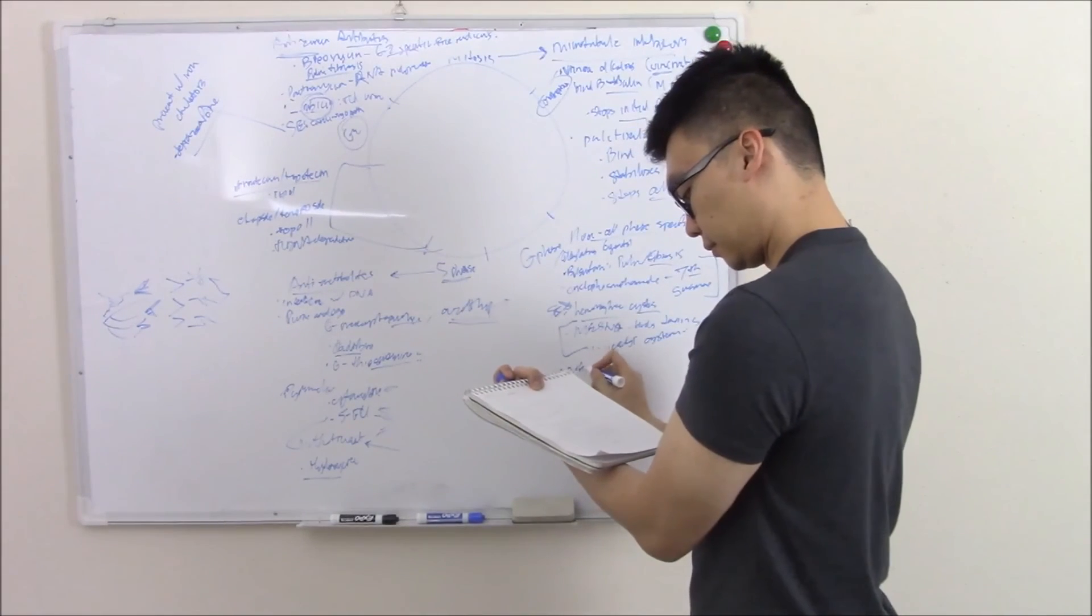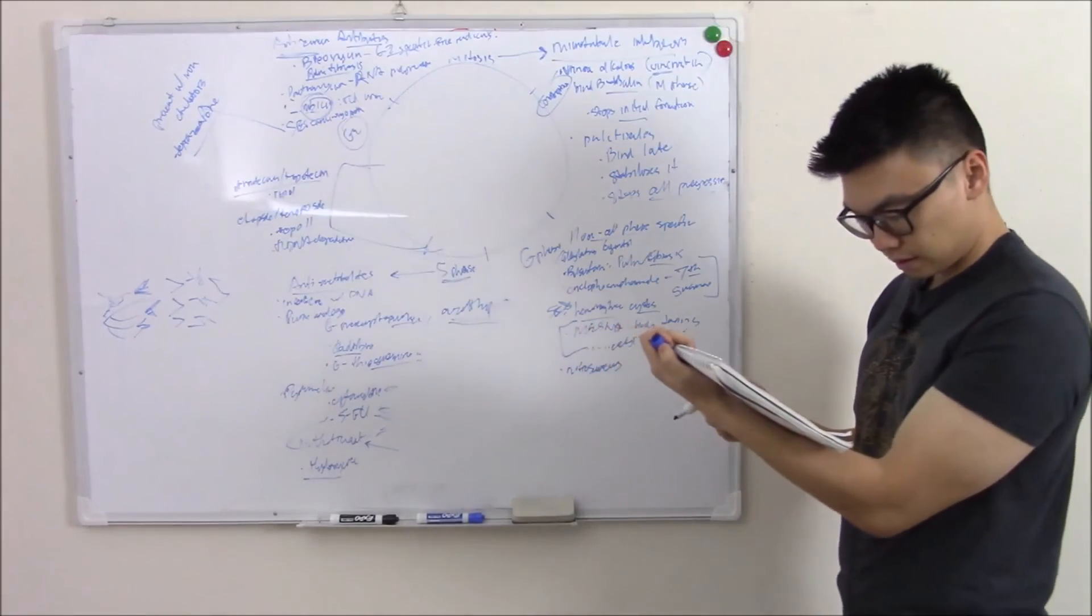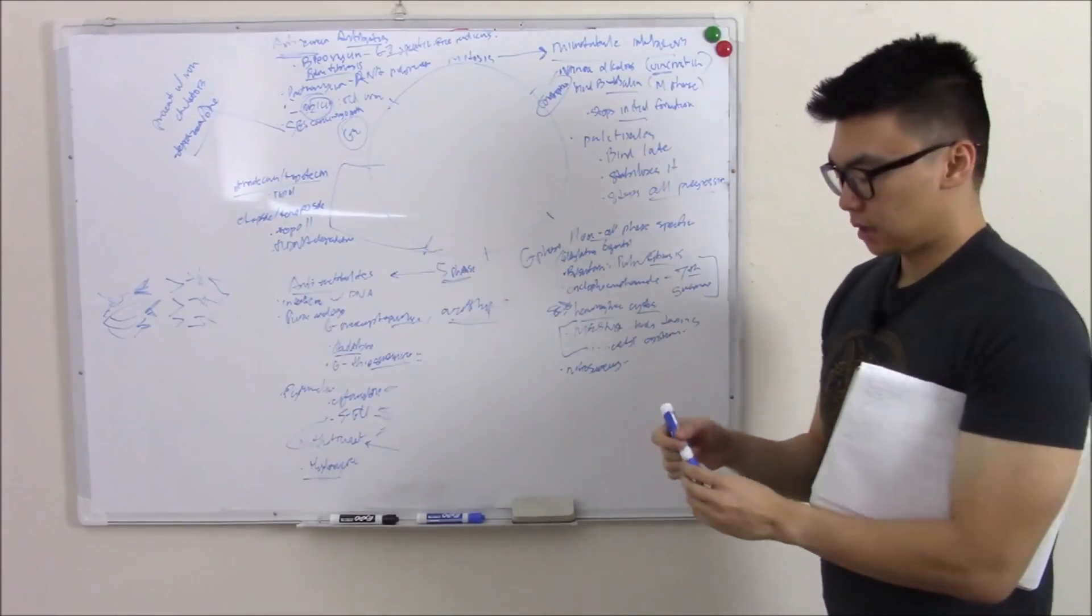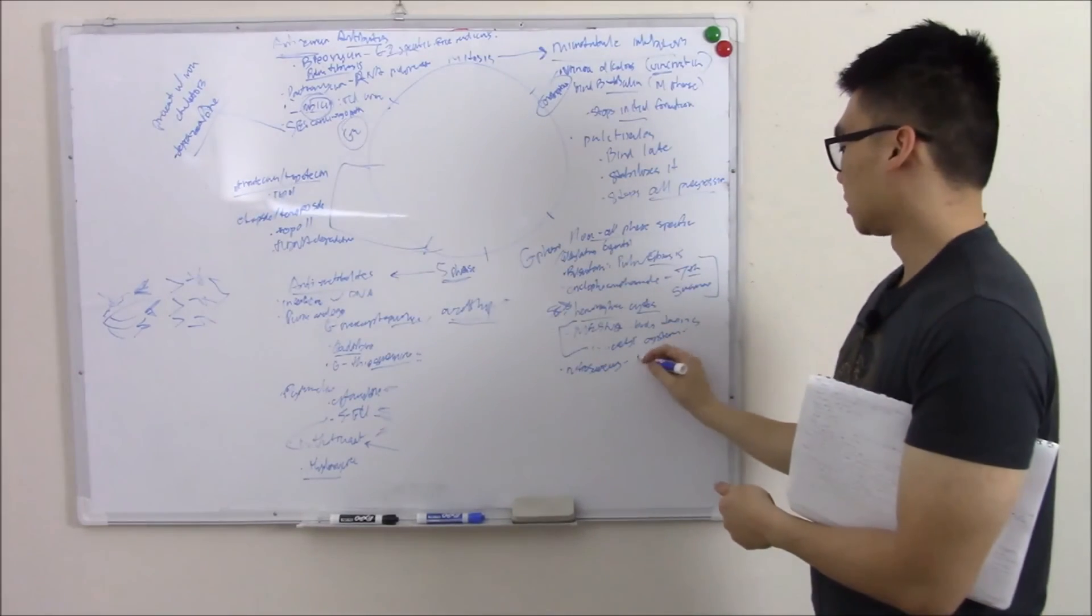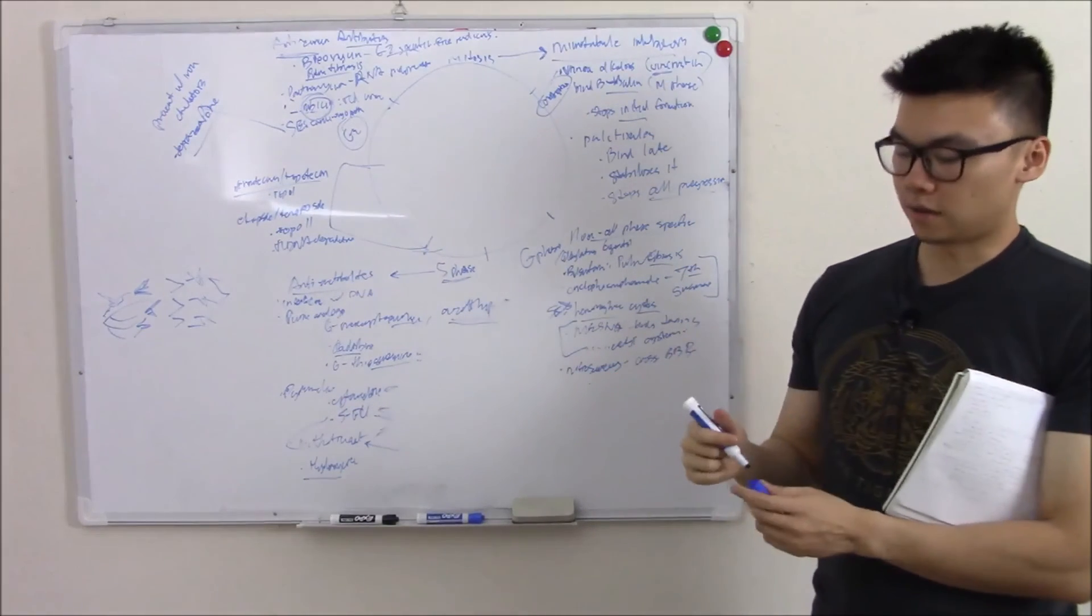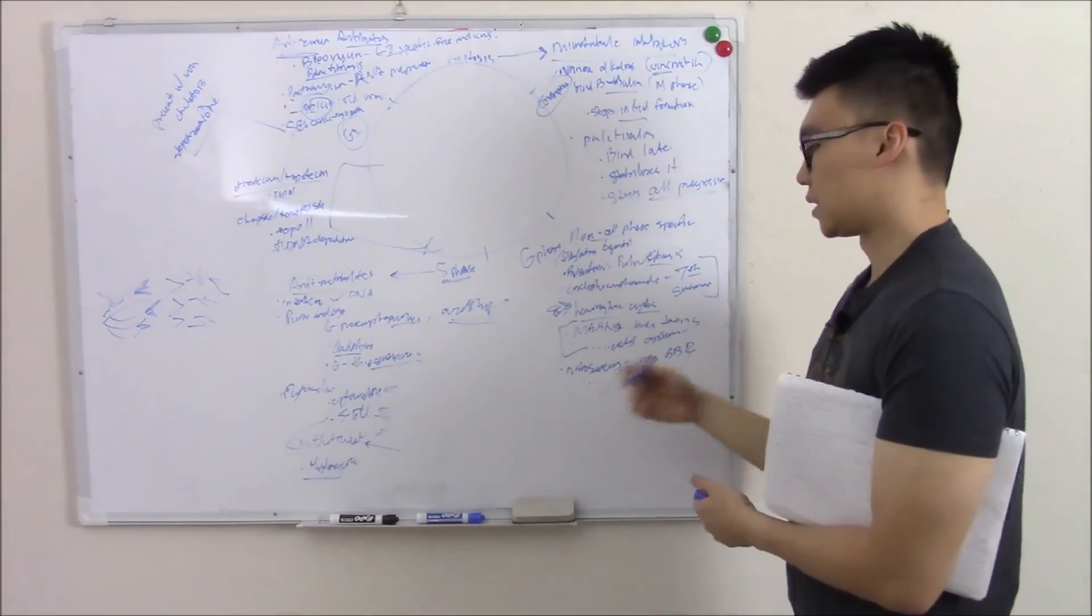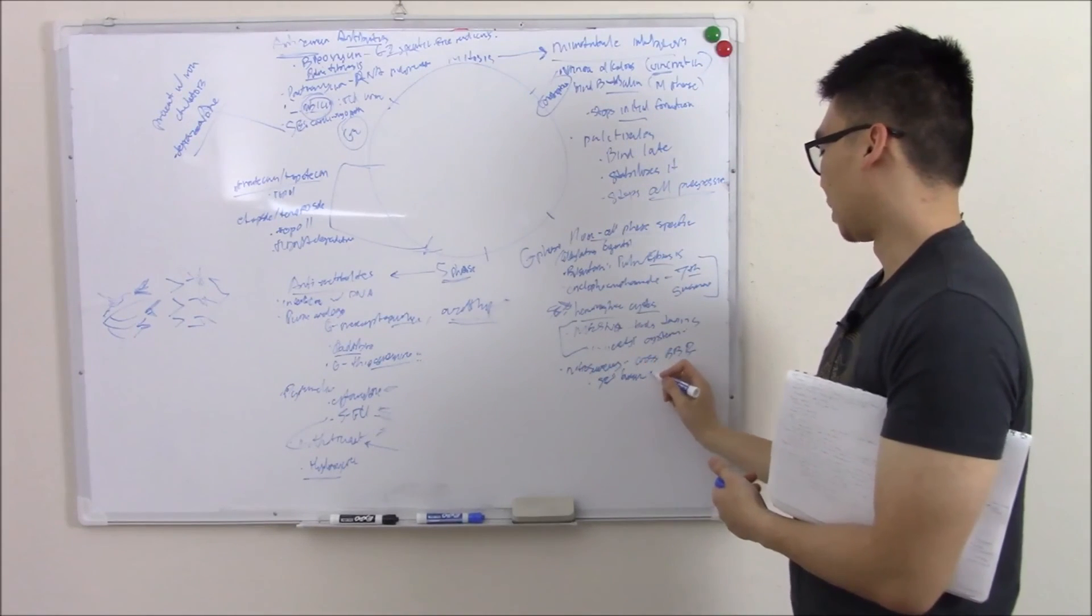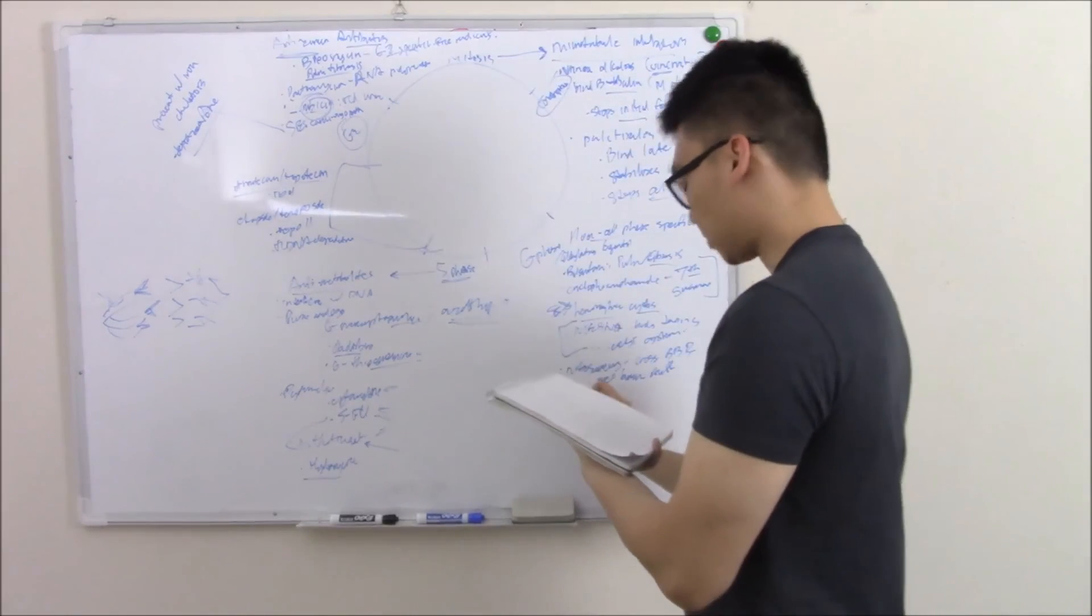Next drug, nitrosoureas. These drugs are highly lipophilic, so they can cross the blood-brain barrier. They can help in tumors of the brain. So cross blood-brain barrier. So brain tumors, side effects of which are going to be all brain related. So nausea, vomiting, ataxia, etc. Side effect, just say brain stuff.